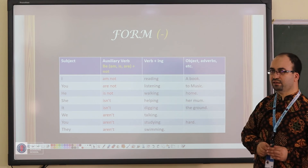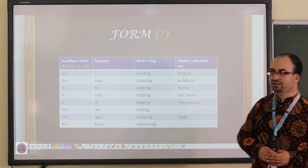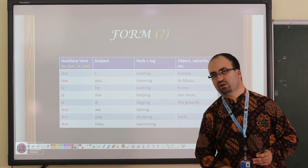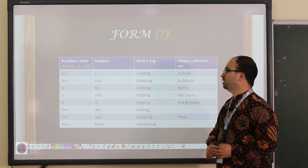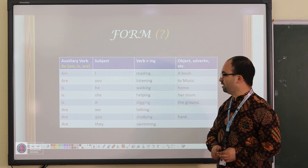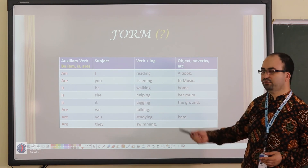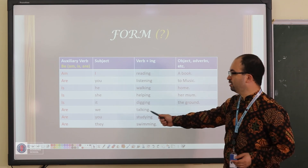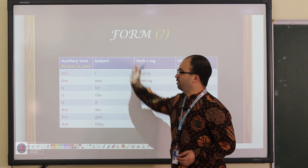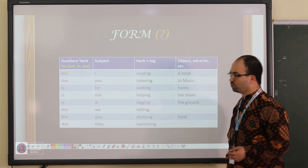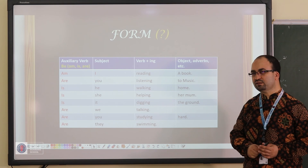To ask questions, we move the auxiliary verb to the beginning, before the subject. For example: Am I reading? Are you listening? Is he walking? Are they swimming? The auxiliary verb 'be,' which was after the subject in statements, moves to the beginning to form questions. And that's all for the present continuous tense.